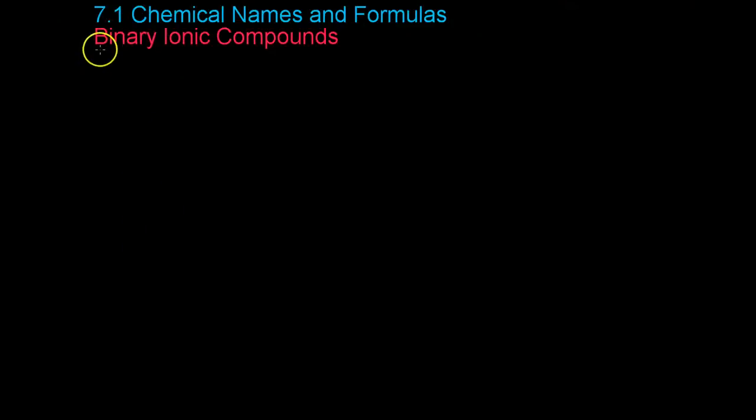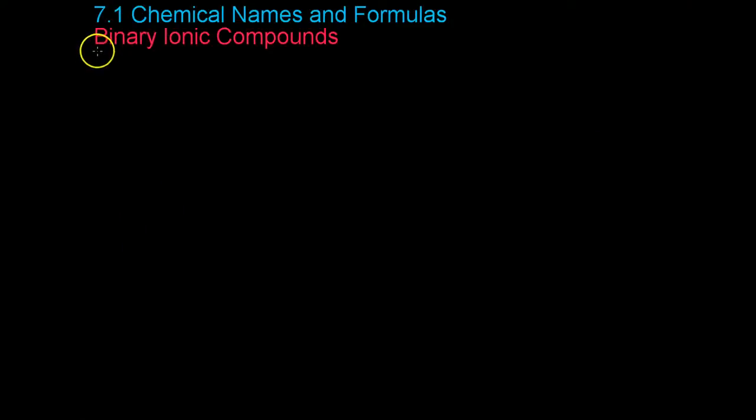In this video we're going to be discussing binary ionic compounds, and let's break down that term a little bit. First of all, binary compounds are compounds that contain only two separate elements.